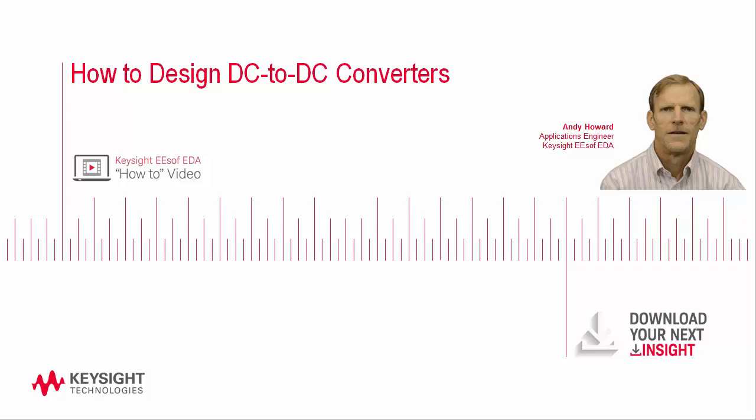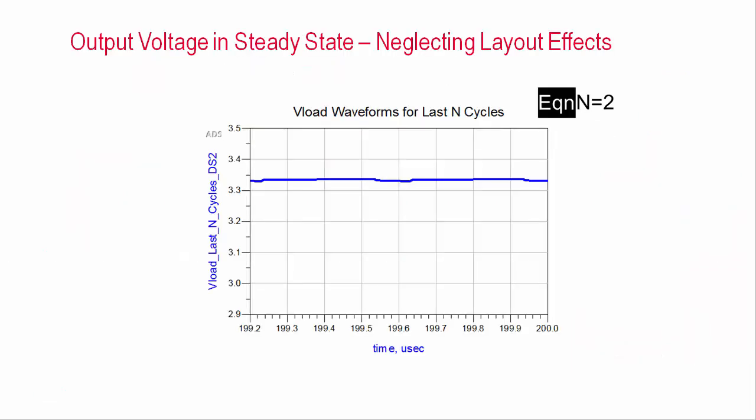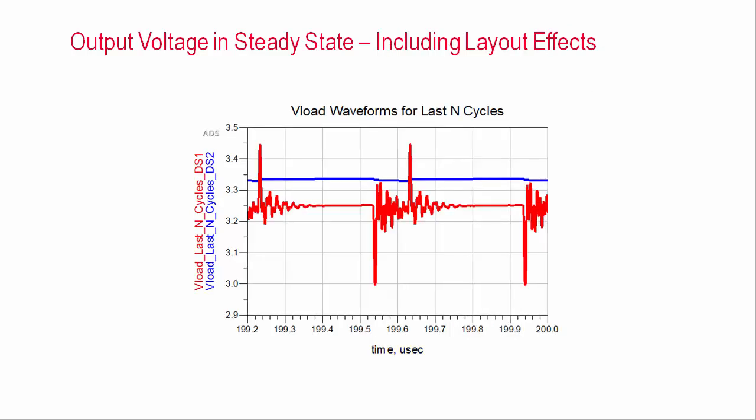DC to DC converters are used to supply a constant output voltage over time and to switch this voltage on or off in a predictable manner. Spice simulators are widely used in DC to DC converter design but they do not include the physical effects of the layout. This shows the simulated output voltage of a DC to DC converter in steady state excluding the undesired effects of PC board traces between components. This shows an example of the degradation that can occur when including layout effects.